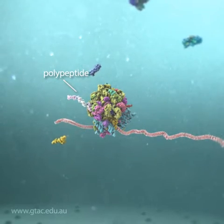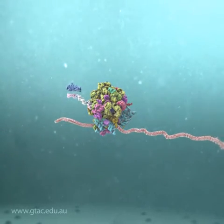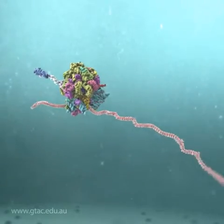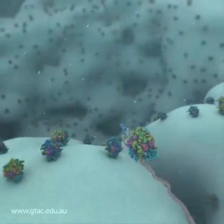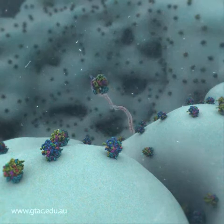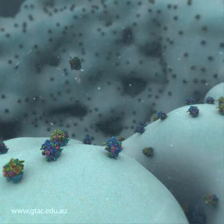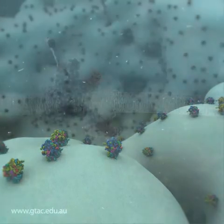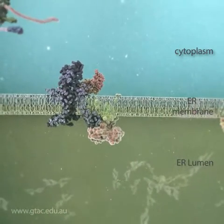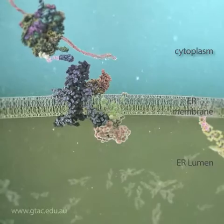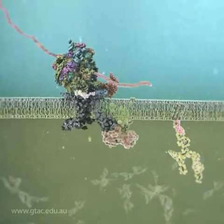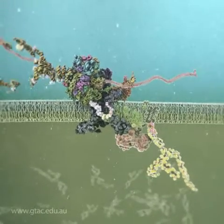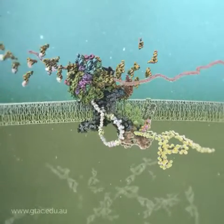The ribosome reads the mRNA code and recruits amino acids to build a polypeptide. This process is called translation. A protein binds to the growing polypeptide chain and directs the ribosome to dock at the surface of the rough endoplasmic reticulum. Translation resumes and the polypeptide is transferred into the lumen of the endoplasmic reticulum.